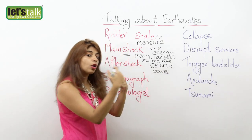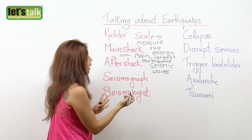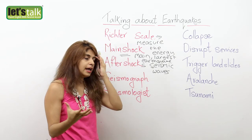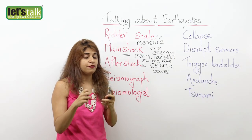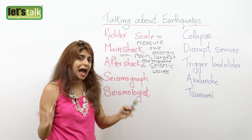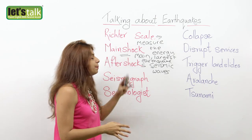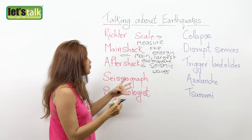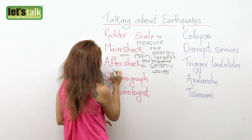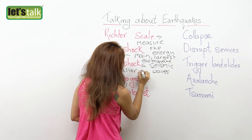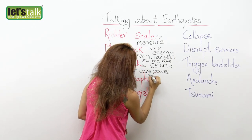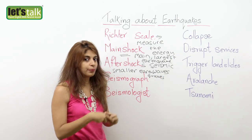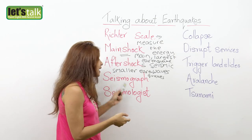What follows after the main shock is aftershocks. Aftershocks occur occasionally, and especially if there has been a big or large earthquake, it's inevitable that aftershocks would be felt by people in the area of the main shock. So aftershocks are smaller earthquakes that occur occasionally after the main shock.